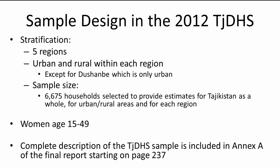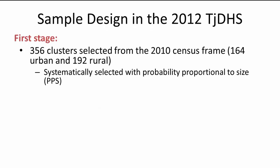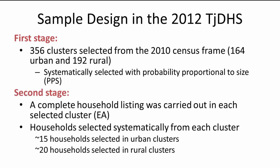After households are selected, survey teams travel to the selected clusters and interview the selected households to implement the DHS survey. For the 2012 Tajikistan DHS, a sample size of 6,675 households was selected to provide estimates for Tajikistan as a whole, for urban and rural areas, and for each of the five regions. All women aged 15 to 49 who were either permanent residents or visitors present in the household on the night before the survey were eligible to be interviewed. The sample design is a two-stage cluster sampling procedure. In Stage 1, 356 clusters were selected from the 2010 Census Frame — 164 in urban areas and 192 in rural areas — systematically selected with probability proportional to size. In Stage 2, households in each cluster were selected based on a complete listing, with approximately 15 households selected from each urban cluster and approximately 20 from each rural cluster.